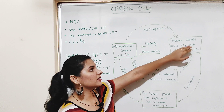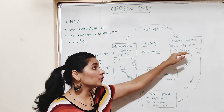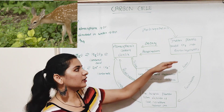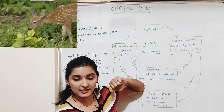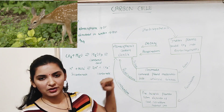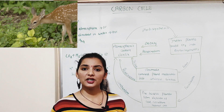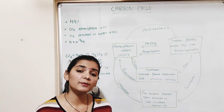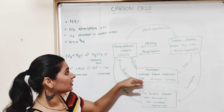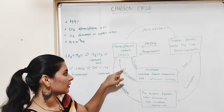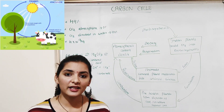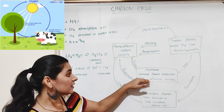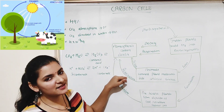Large quantities of carbohydrate stored by producers are passed on to the next trophic level — to herbivores — when they eat the plants. These animals use the stored carbohydrate for energy production and to produce animal tissue. During energy production, some carbon is released back to the atmosphere as carbon dioxide through animal respiration.